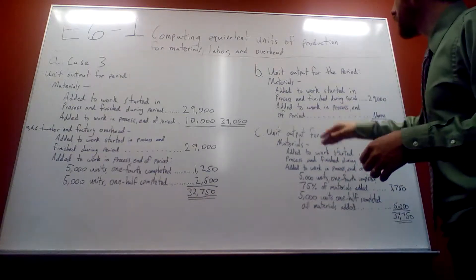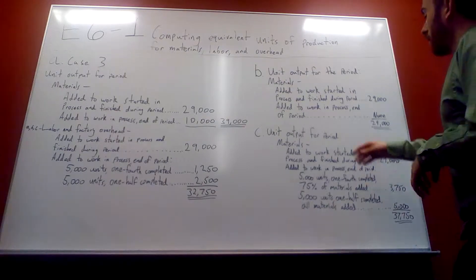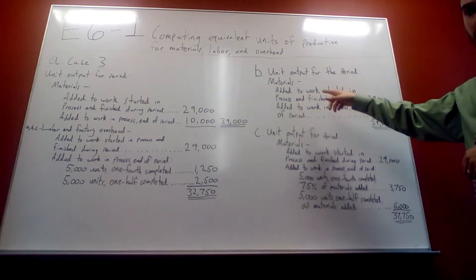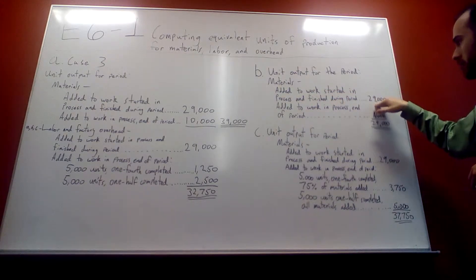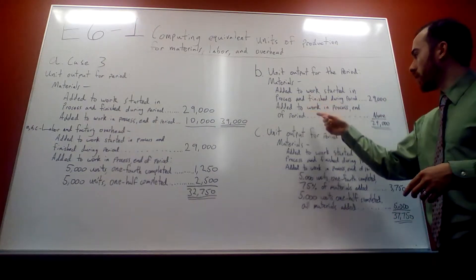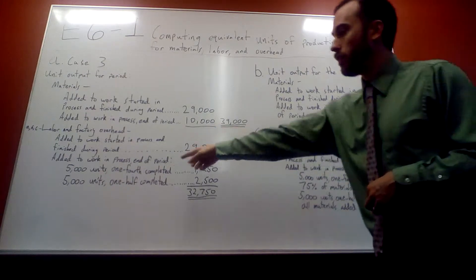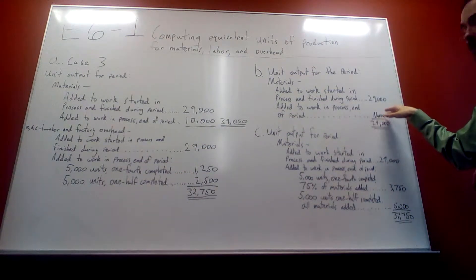Okay, so B, materials are added at the end. So when they're added at the end, the ones that are finished, started and processed and finished, because they're finished, the full 29,000. But the ones that are added to work and processed at the end of the period, because they're only one fourth and one half, zero, none.